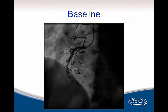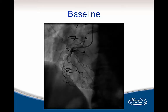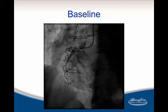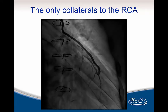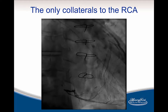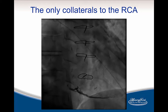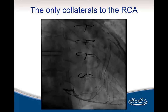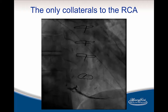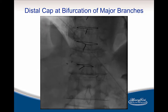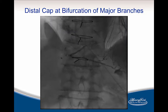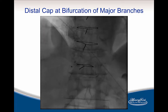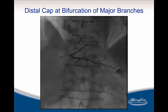This is a baseline angiogram. The RCA is dominant. We don't see the distal circulation because of that single injection during the diagnostic. The proximal cap will probably be defined here. There are a lot of marginal branches. The only collaterals to the RCA were actually coming from the LAD. Unfortunately, the LAD was chronically occluded, and the flow to the LAD was provided via a LIMA. The distal cap was at a bifurcation of two major vessels, the PDA and posterolateral branches. They are both large vessels, so there was not much landing zone for antegrade dissection reentry.